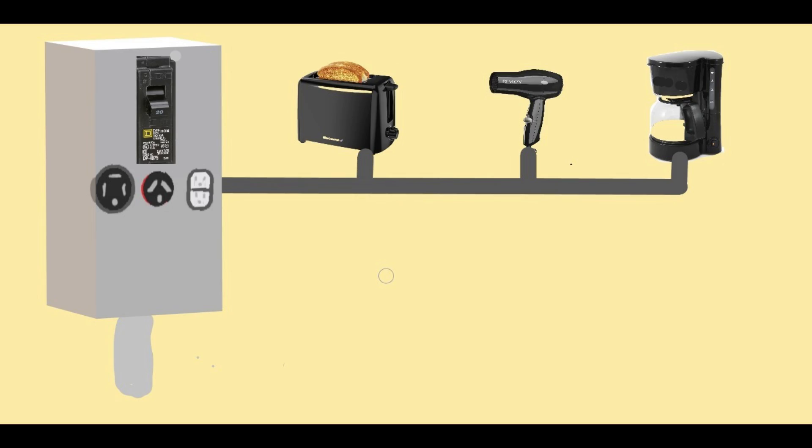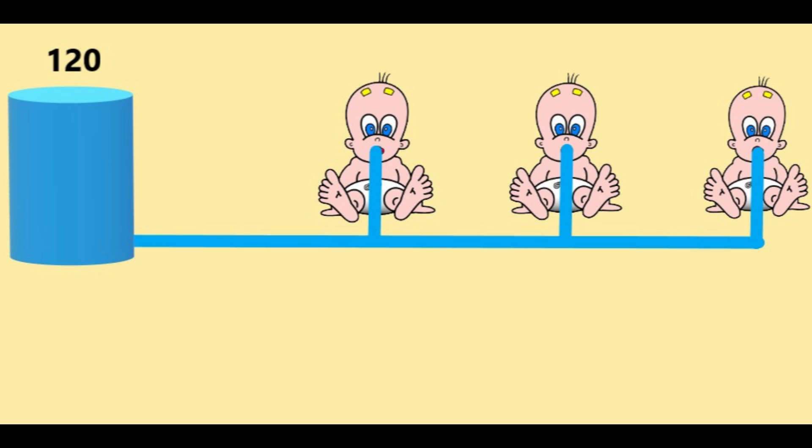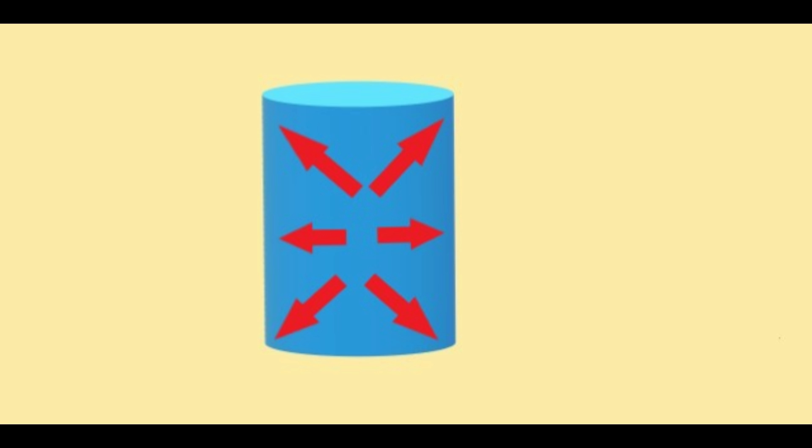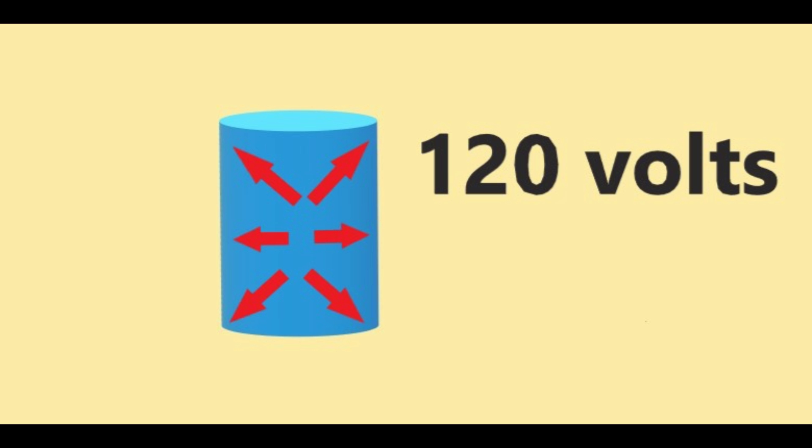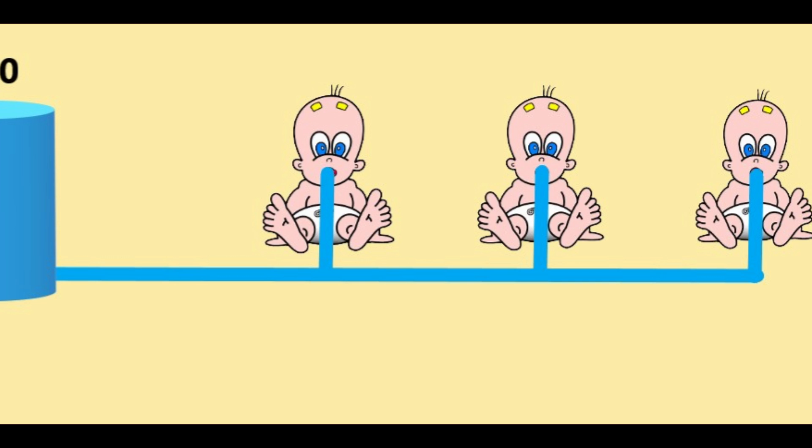To finish explaining this stuff, let's bring back the babies. Now you know that this setup represents a 120 volt 30 amp electrical system. If we look at the drum, it has a lot of juice in it, and this juice is under pressure. That's what drives the juice down the hose. This pressure, in electrical terms, is the voltage or volts, and this panel represents a standard 120 volt power source. Understand that? Good.